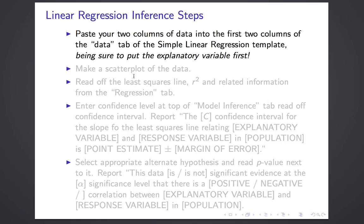I'm going to give you a quick summary of how to do linear regression inference. We'll use a template, and you'll see it when I do an example. It starts by pasting your data into the data tab of the simple linear regression template. Our data now will be two numbers per individual — two equal-sized columns of numbers. You'll remember that when we made scatter plots, we always had to put the explanatory variable first. That continues to be important here. As you paste, make sure you've pasted the explanatory variable first, or all sorts of things will be incorrect.